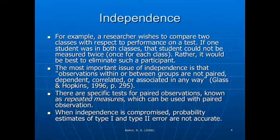For example, a researcher wishes to compare two classes with respect to performance on a test. If one student was in both classes, that student could not be measured twice — that would break the independence assumption. Make sure that you're not doing paired tests. We do have repeated measures tests and paired observations, but for the purposes of the one-way ANOVA, you can't use those types of groupings. Independence is a rule that cannot be compromised, and if it is compromised, your results are likely invalid.